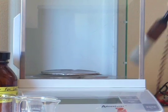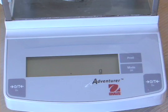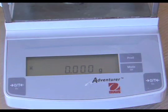To start, make sure that the balance pan is clean. Press the on-tare button to zero the scale. When the star appears in the readout, the scale is ready.